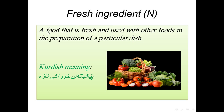A fresh ingredient is a food that is fresh and used with other foods in the preparation of a particular dish. The Kurdish meaning of fresh ingredient is 'pekati kuraki tanza'. As you see from the picture, you see many different types of vegetables. We use these kinds of vegetables with other foods, sometimes for the preparation of a particular food or dish.